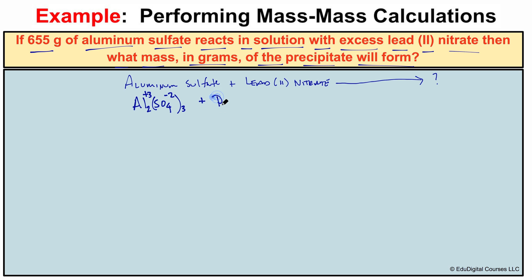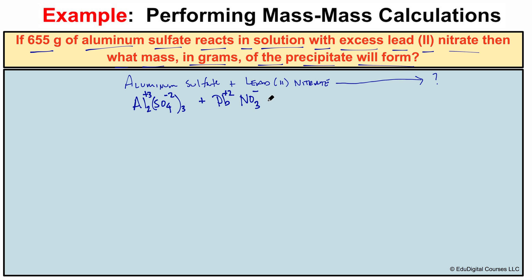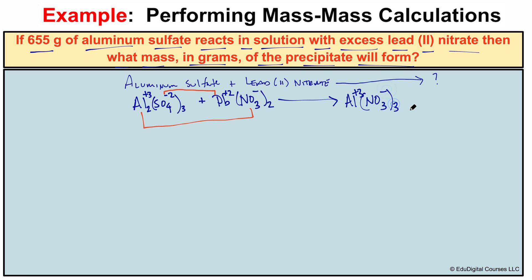Lead two is Pb²⁺, and nitrate from the polyatomic ion list is NO₃ with a minus one charge. Because these two ionic charges do not add up to zero, we need two nitrates: Pb(NO₃)₂. This looks like a double replacement reaction. The two possible products are aluminum nitrate — aluminum is +3, nitrate is NO₃⁻, so we need three of them, Al(NO₃)₃ — and lead two sulfate, PbSO₄, where the +2 and −2 charges add up to zero.